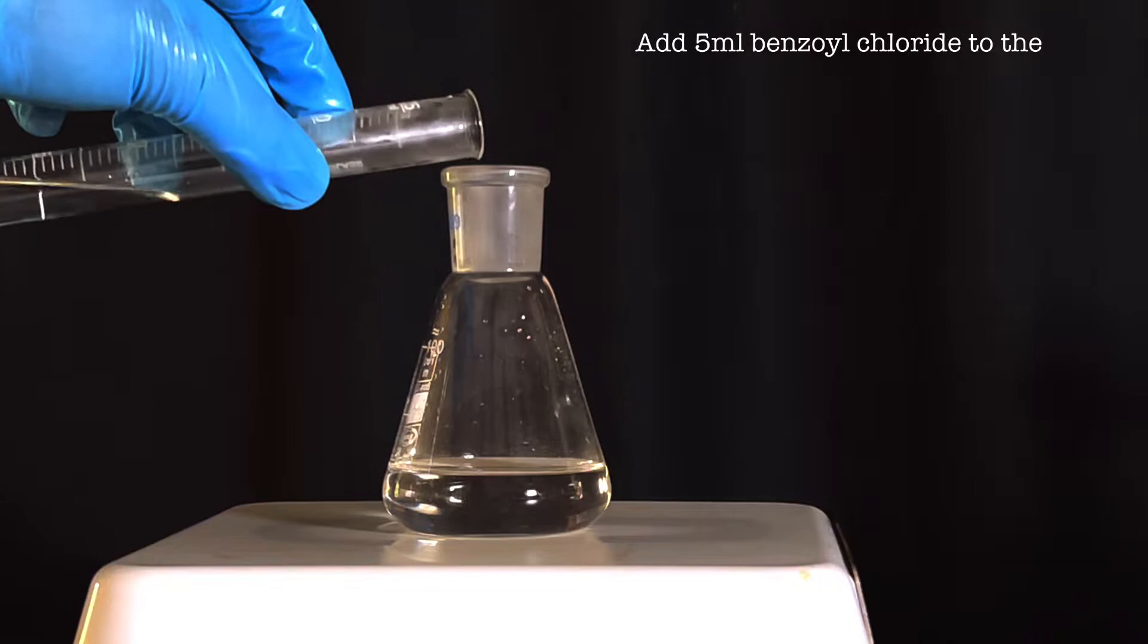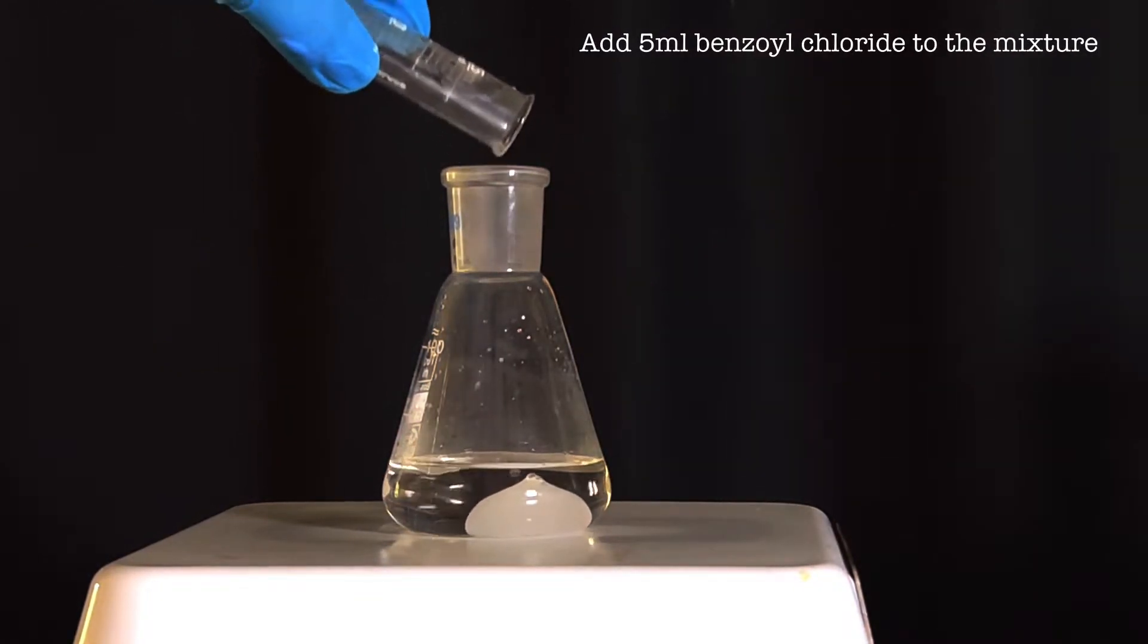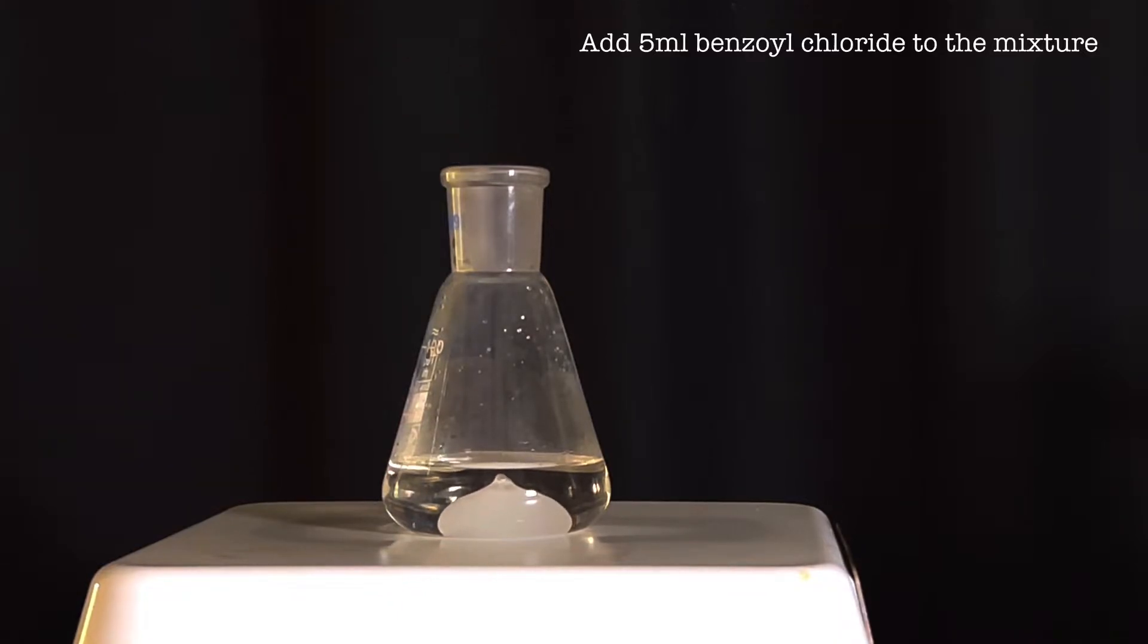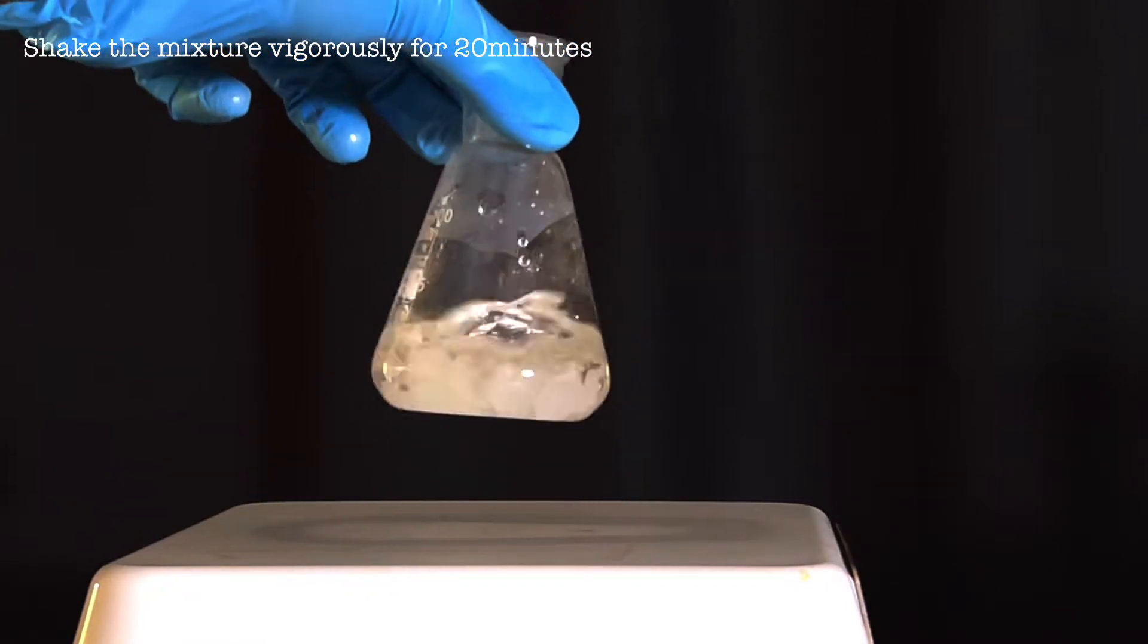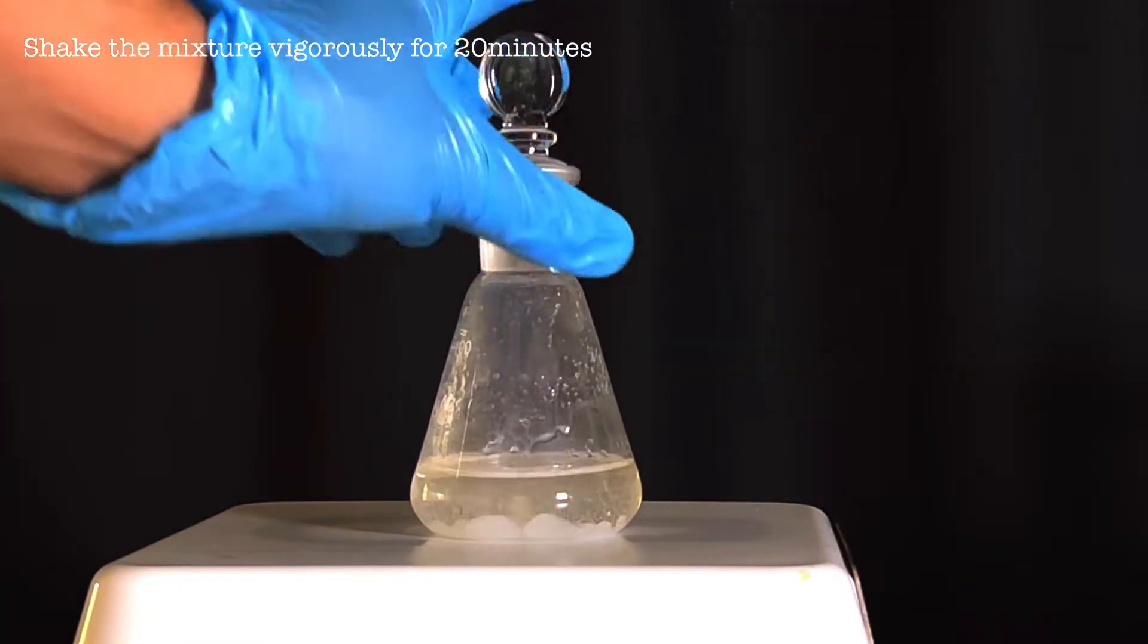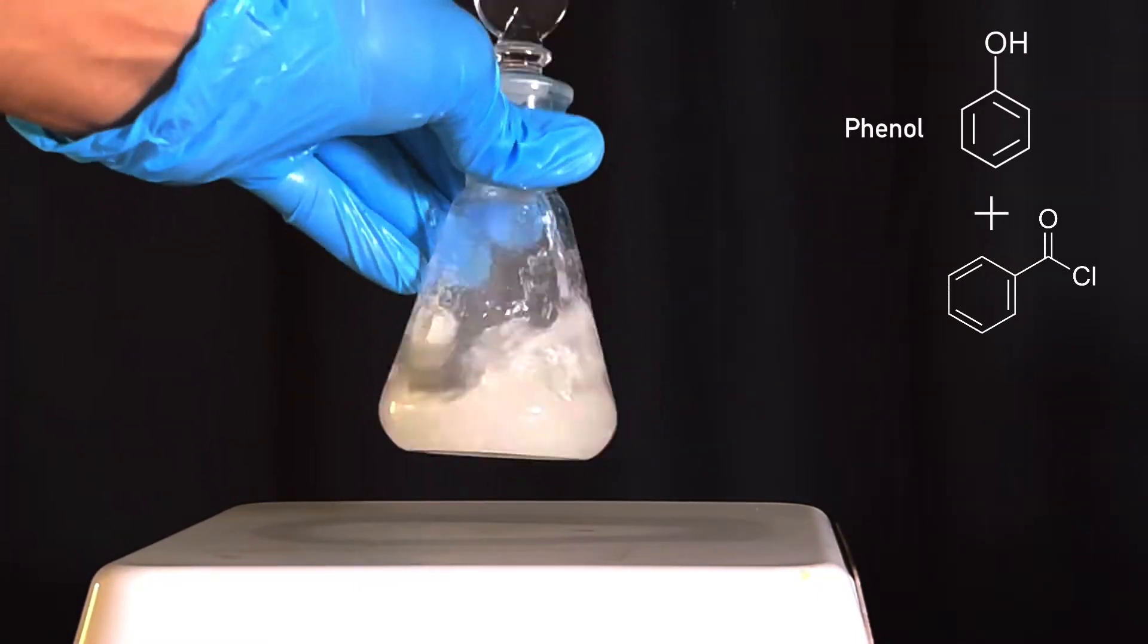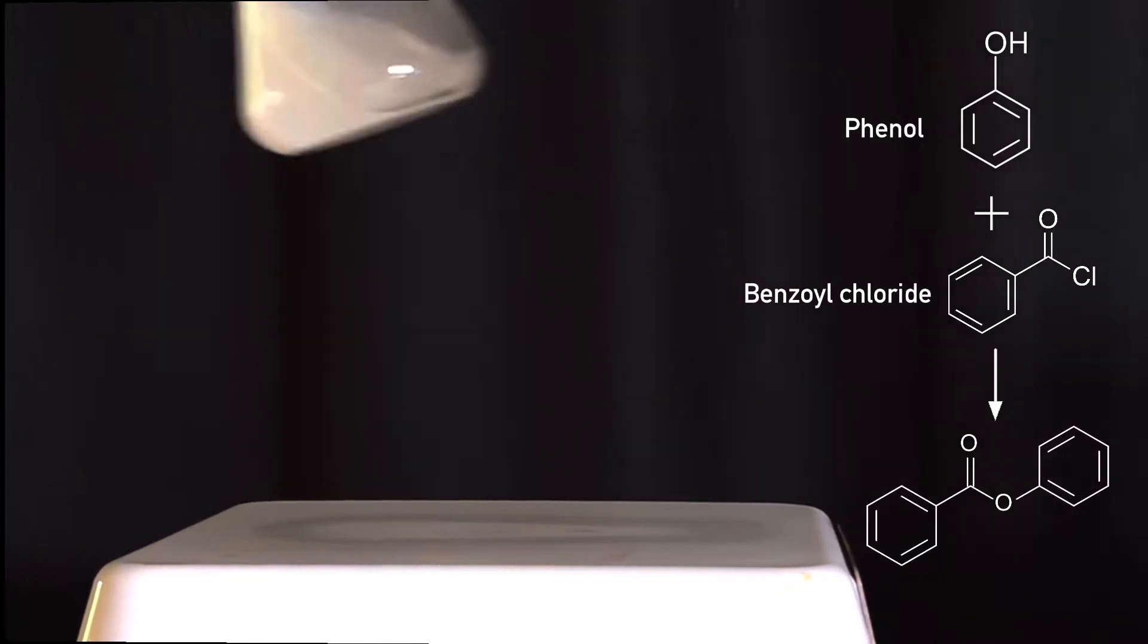Now 5 milliliters of benzoyl chloride was added to the 100 ml Erlenmeyer flask containing the reaction mixture. The glass stopper was tightly capped and the flask was shaken vigorously for about 20 minutes. This causes the phenyl benzoate to form.